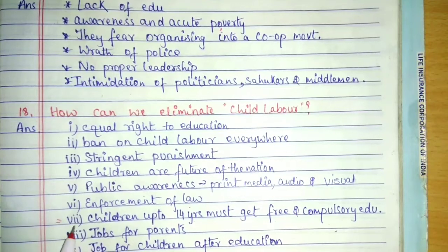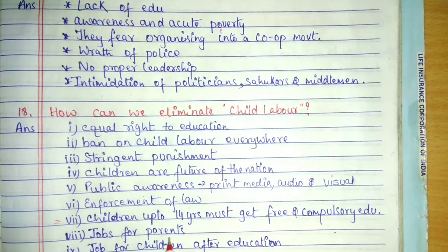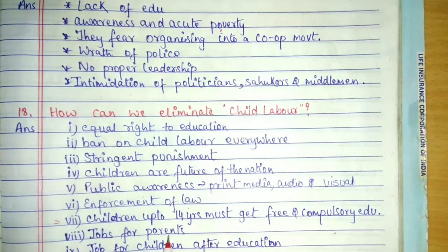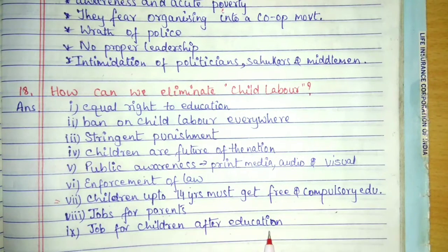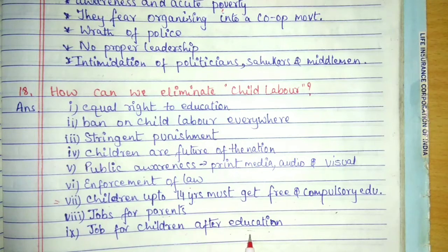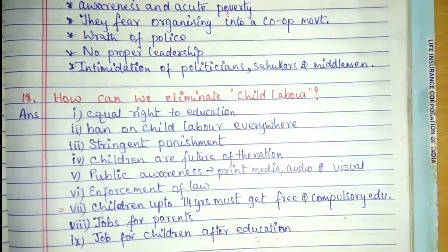Job for parents: if children are going to school, parents need financial support. If parents' jobs are secure, there won't be any question of sending their children to work, so there should be proper jobs for parents. And job for children after education — most people think, what is the use of education if they have to go back to rag picking or tea stalls or factories? Therefore there should be proper jobs for all children who complete their education. With this, we have completed our question answers.